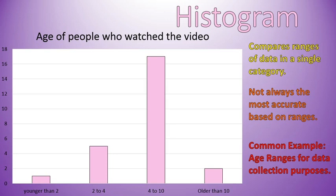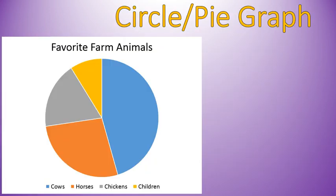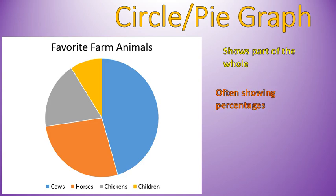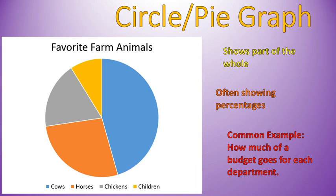A common example of histograms is age ranges for data collection purposes — a really common use. Circle graph, often called a pie graph. This one shows parts of a whole: the full circle is the whole amount, and each section shows a part. It's often showing percentages. One common example is how much of a budget goes to each department — spending this much on food, this much on clothing, this much on housing. Or the example I have here: my favorite farm animals — cows, horses, chickens, and children. Please don't judge me.